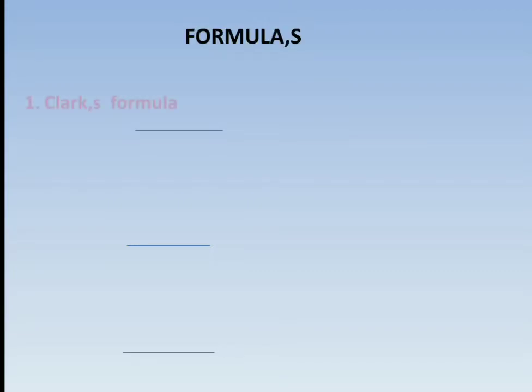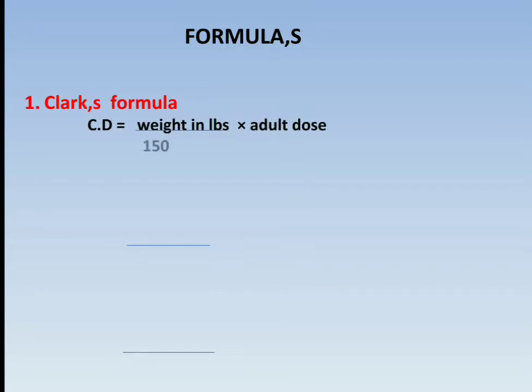The first formula is Clark's formula. Clark's formula is: Child dose = (Weight in lbs × Adult dose) / 150.